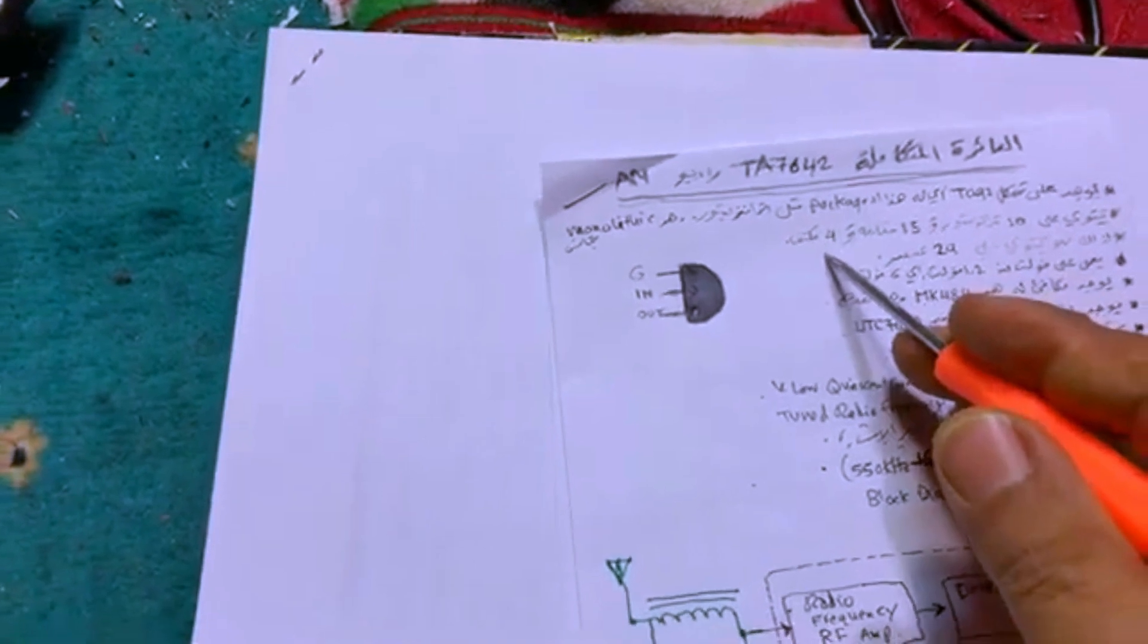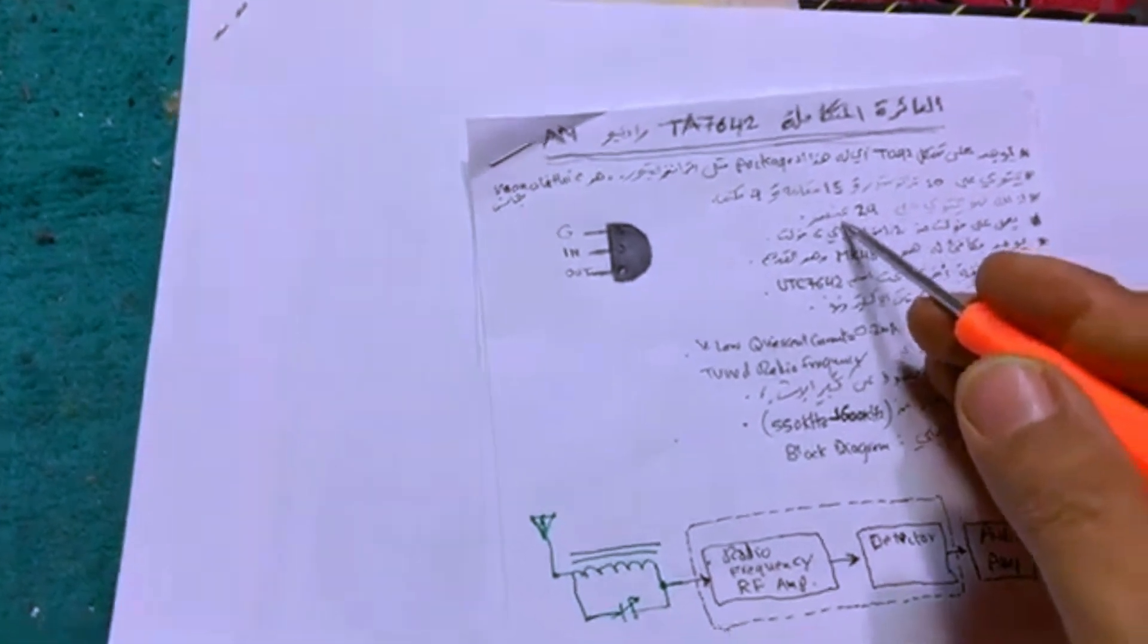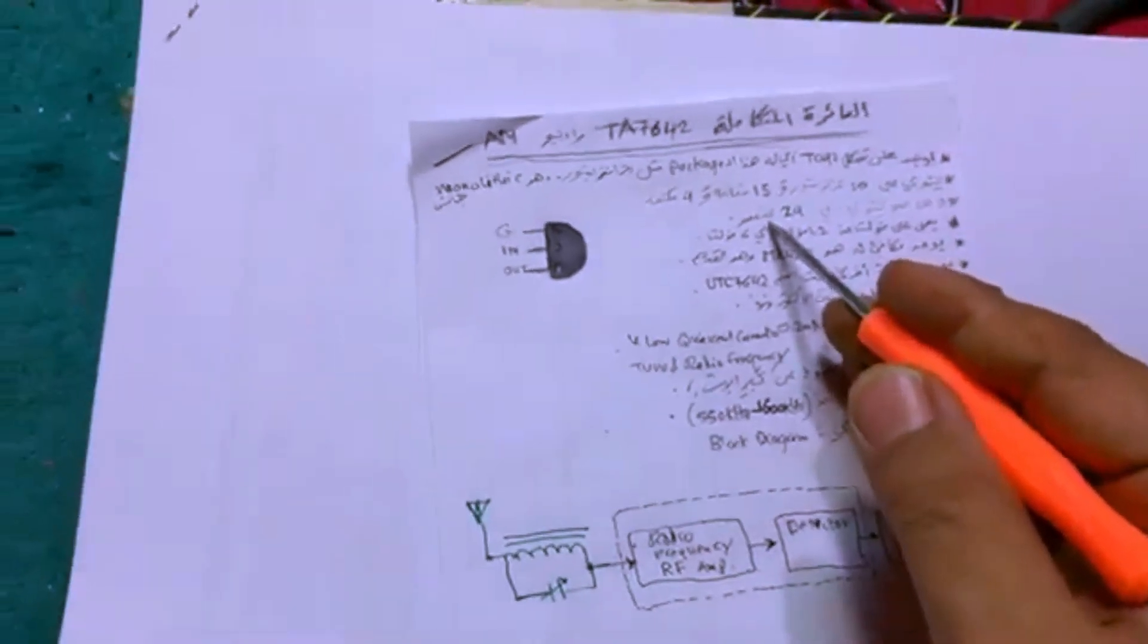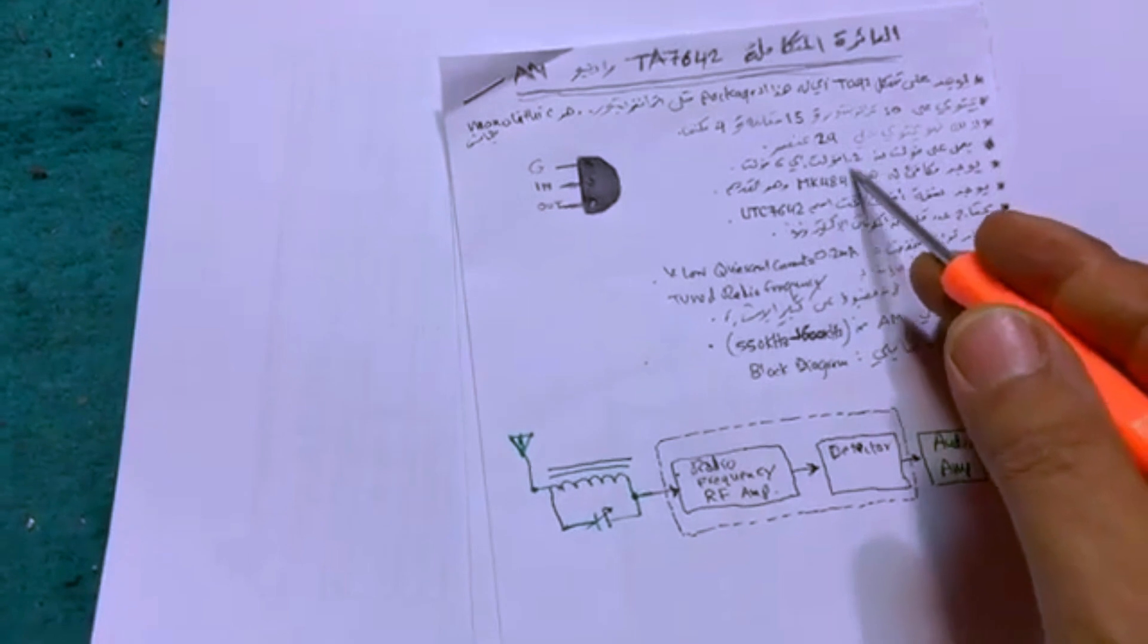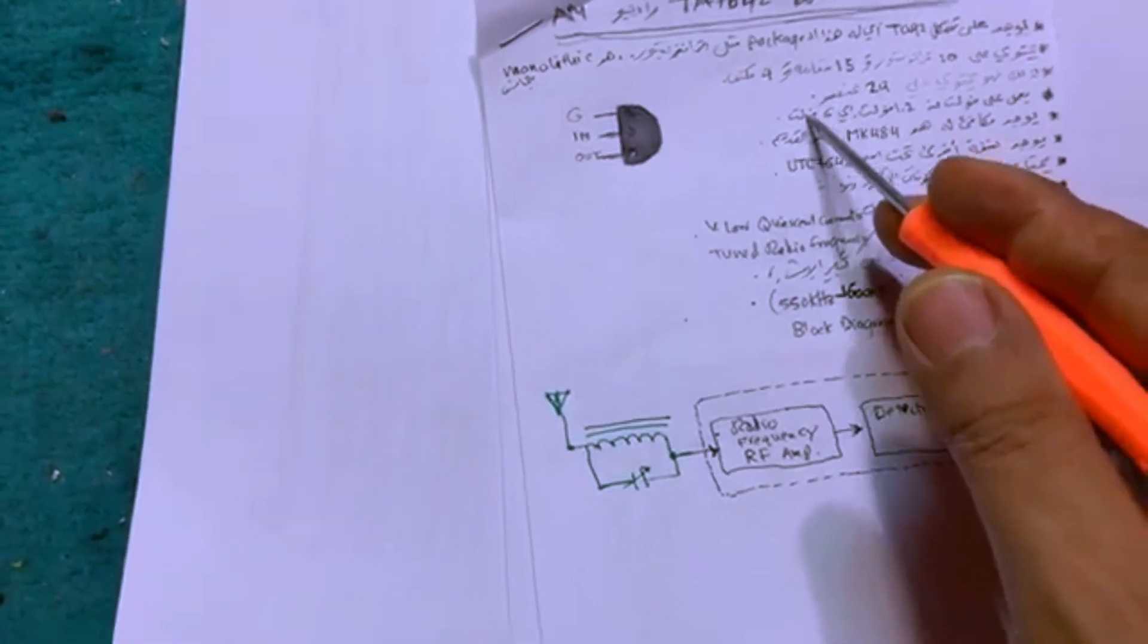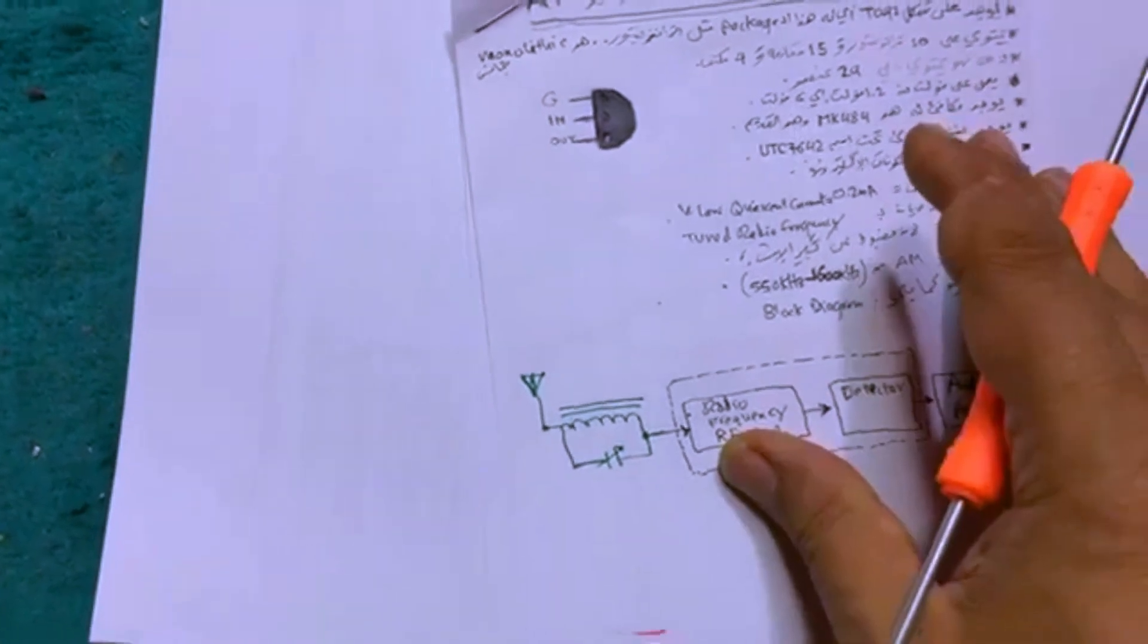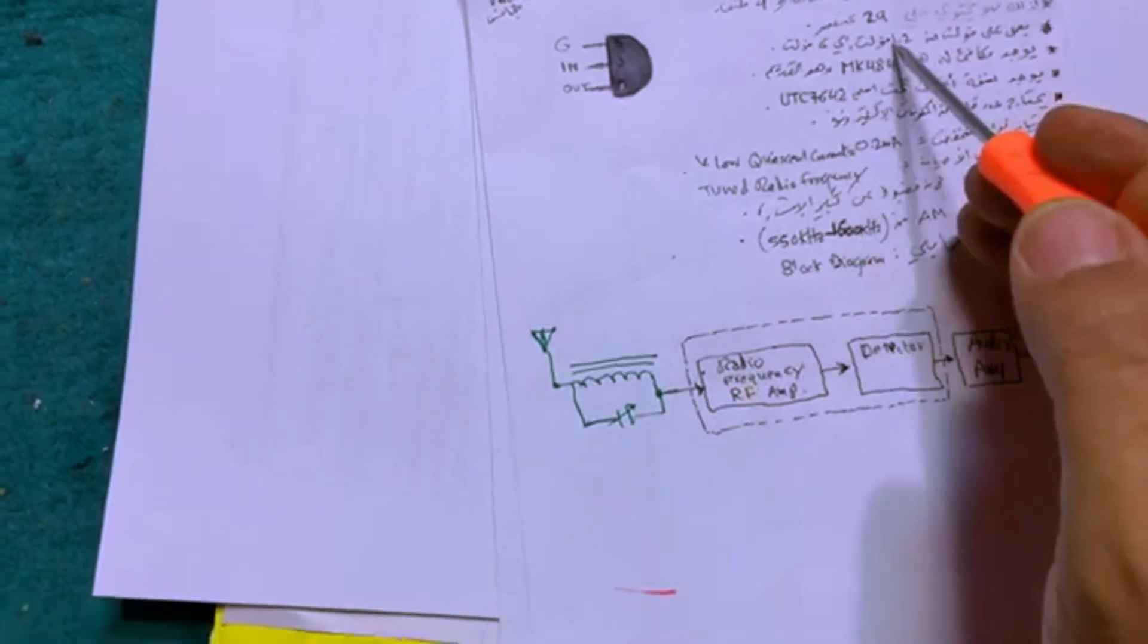In general that will make 29 electronic components. It works on 1.2 volts to 6 volts. I'm not sure about this information and it's not clear. I don't know if it is 1.2 or 6. I think it can reach to 2 volts only. Anyway we can experiment that.